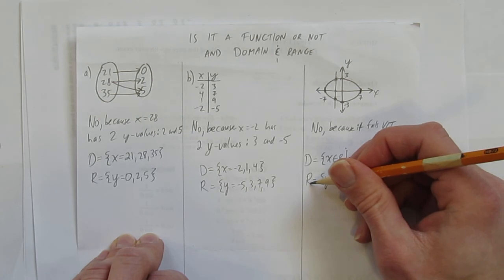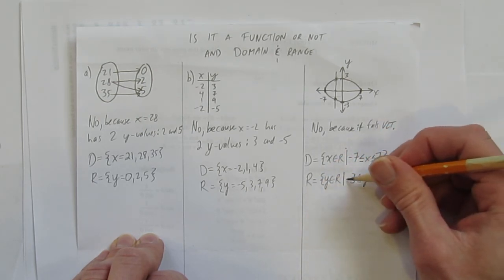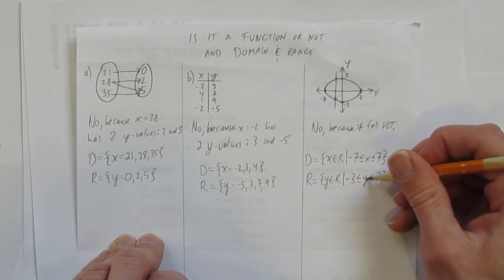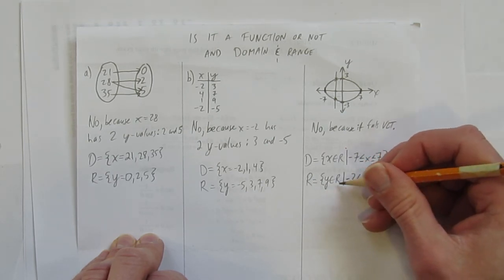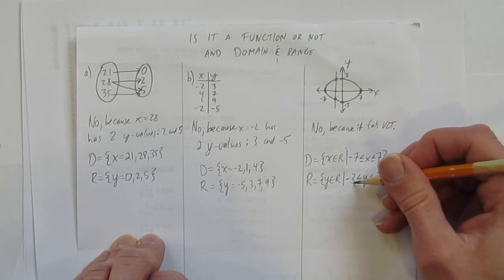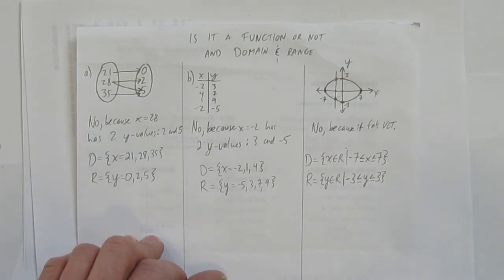Let's read this range. The range is the set of y is an element of R, such that, negative 3 is less than or equal to y, and y is less than or equal to 3. Or in other words, y can be any number, decimal fractions, as long as you stay between negative 3 and 3. And so we've done it. We've figured out if these things were functions or not, and we stated their domain and range.